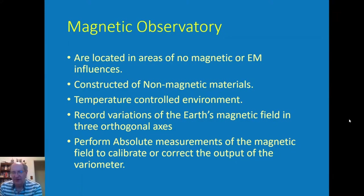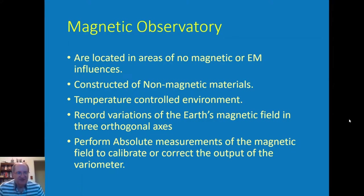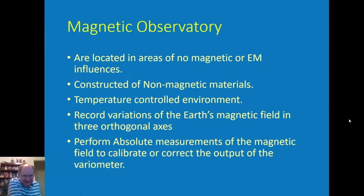At some of our low-latitude observatories such as Puerto Rico and Guam, all you have to do is air condition to about 65–68°F. At mid-latitudes such as Boulder, you have to heat it in winter and cool it in summer, and what we've learned to do is place the HVAC plant about 200 feet away and duct the warm or cool air into the non-magnetic building.